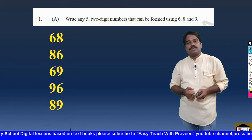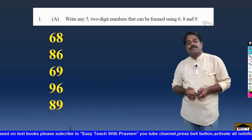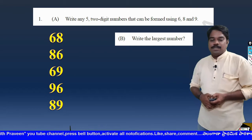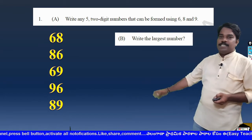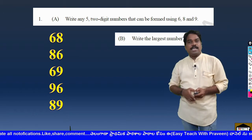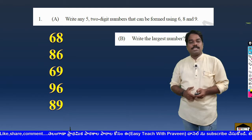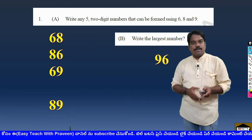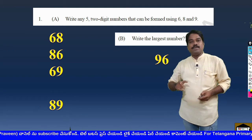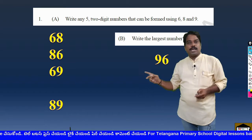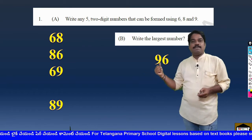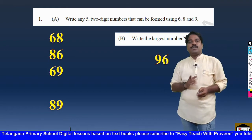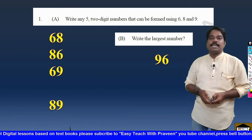Now some questions are asked. Write the largest number. What is the highest number among these 5? That is 96, because it is having 9 in the tens place. When the tens place digits are all equal we look at the ones place, and the number with the bigger ones place digit is the largest. Only one number has 9 in the tens place — so 96 is the largest number.